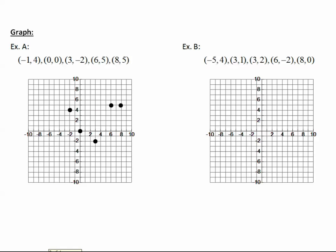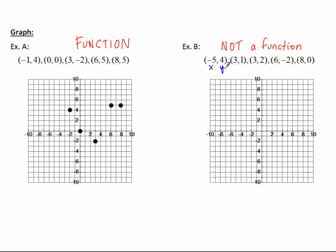Let's take a look at it graphically. These are the same ordered pairs plotted on a graph. The first example is a function; the second example is not a function. Plotting the points for example B: negative five, four; three, one; three, two; six, negative two; and eight, zero.